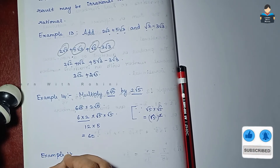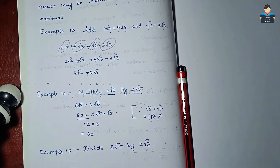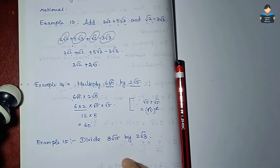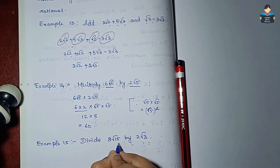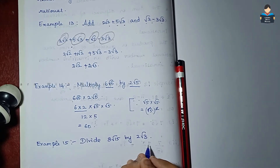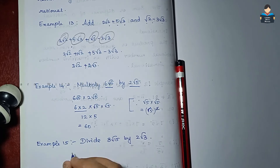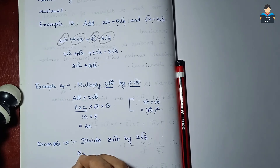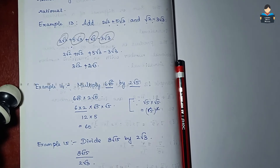Example 15: Divide 8√15 by 2√3. So we evaluate 8√15 ÷ 2√3.